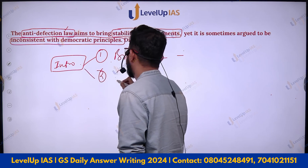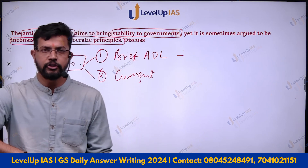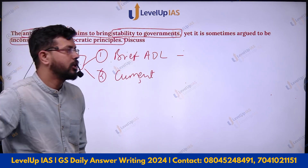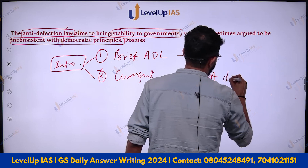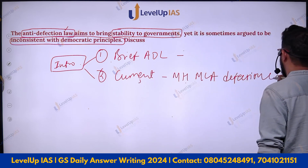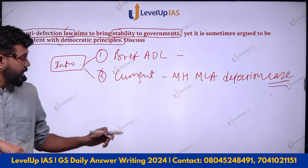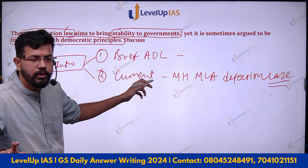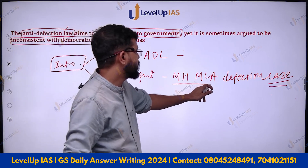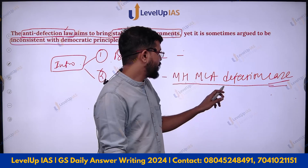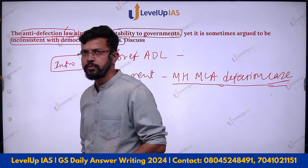The second type is to start with current affairs. You can give any current affairs news related to anti-defection law — for example, the Maharashtra MLA defection case. If you start with a current affair, the examiner will get an idea of the context and why the question is being asked.